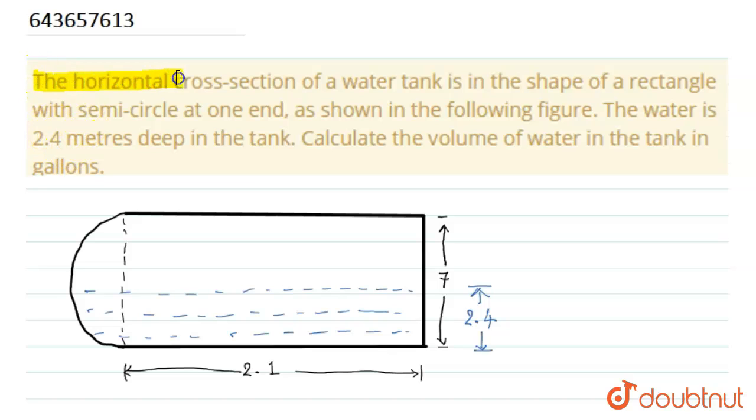that the horizontal cross section of a water tank is in the shape of a rectangle with semicircle at one end. So here in the figure, this rectangular kind of tank is there where one end is a semicircle.